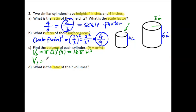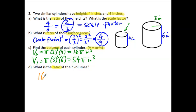What is the volume of the larger cylinder? The volume of the larger cylinder is π times the radius squared: 3 squared times the height of 6. 3 squared is 9, 9 times 6 is 54, so it's 54π cubic inches. The ratio of the volumes is 16π over 54π. The π's cancel, and 16 over 54 simplifies to 8 over 27.